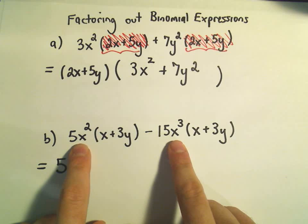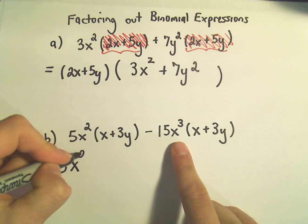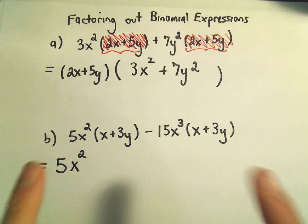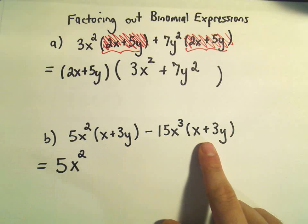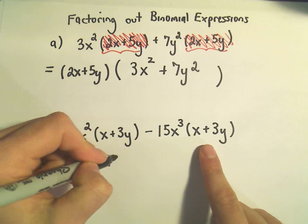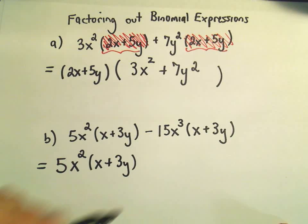Then I say, oh, they both have x's to powers. There's an x squared and an x cubed. We have to pull out the smaller exponent, which would just be x squared. And then I also notice there's an x plus 3y that's in common. So I can also factor that out. In this case, we factored out a lot of stuff.